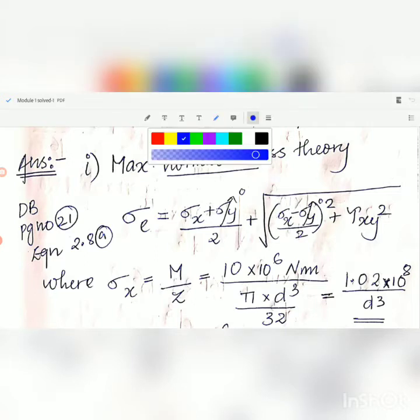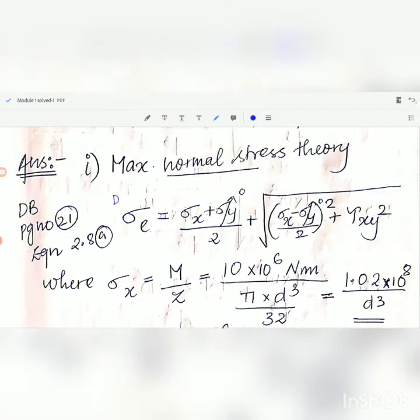Here on the left side you should be reporting this design stress sigma e. Instead of sigma x, here we have only bending load, so sigma x should be substituted by M by z, and tau xy should be given as t by zp. What is the value of bending moment? Bending moment is given as 10 kNm.